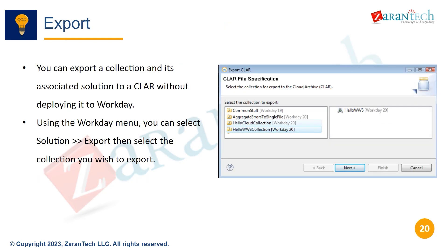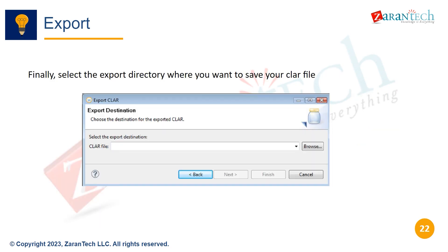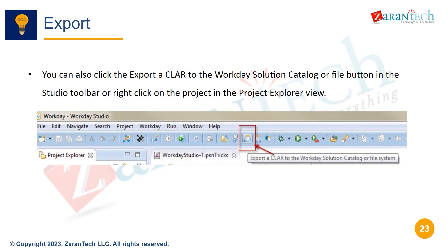You can export a collection to a CLAR without deploying to Workday. From the Studio menu, select Solution > Export, then select the collection to export. You can select the export directory to save the CLAR file. You can also export a CLAR using the export button in the Studio toolbar or by right-clicking the project.